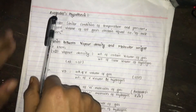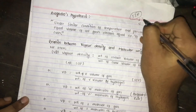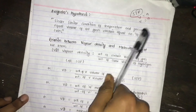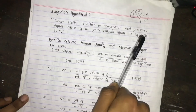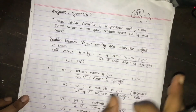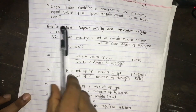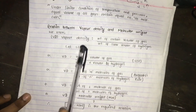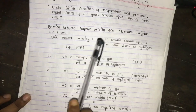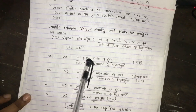So, Avogadro's hypothesis states that under similar conditions of temperature and pressure, equal volumes of all gases contain equal numbers of molecules. For a short note or pass marks, remember: vapor density equals the weight of a certain volume of gas divided by the weight of the same volume of hydrogen at STP.